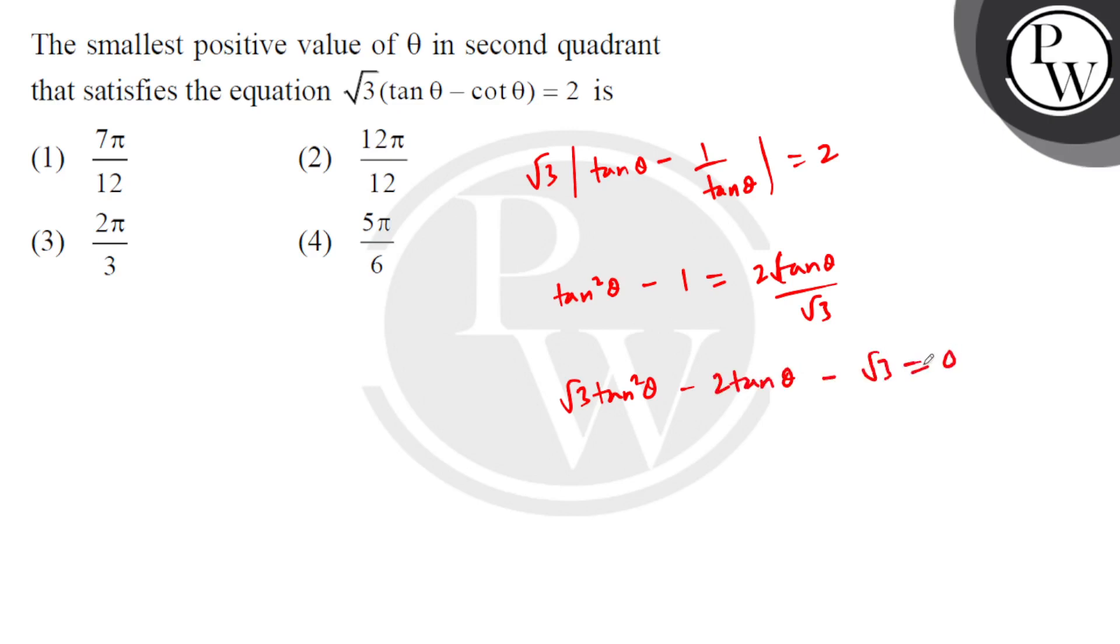equals 0. So splitting the middle terms, we write root 3 tan squared theta minus 3 tan theta plus tan theta minus root 3 equals 0.